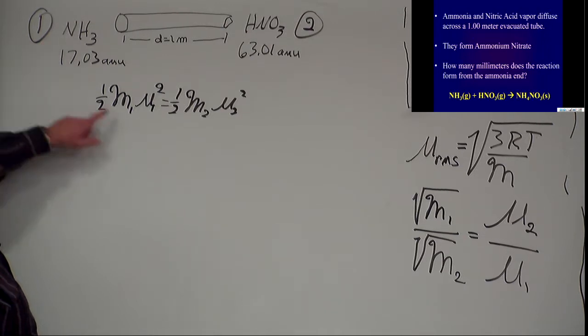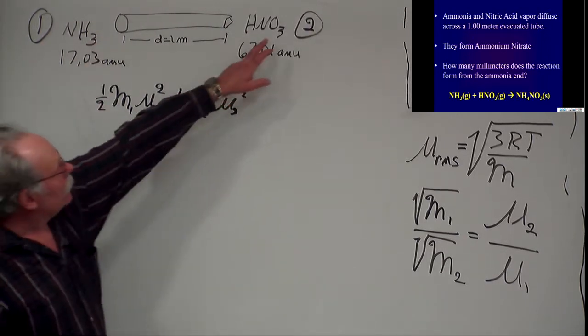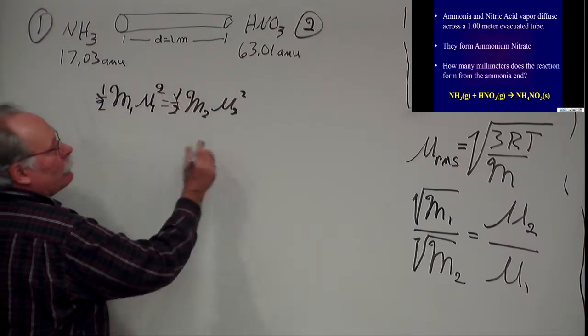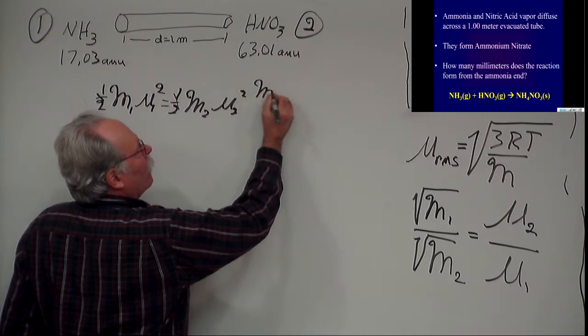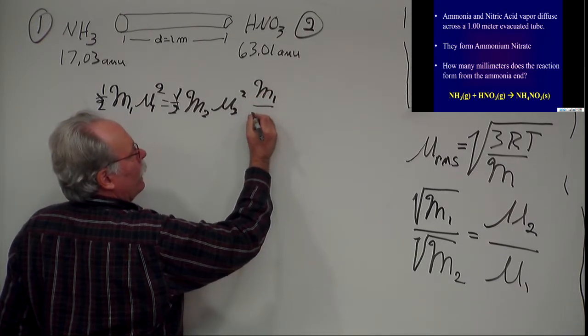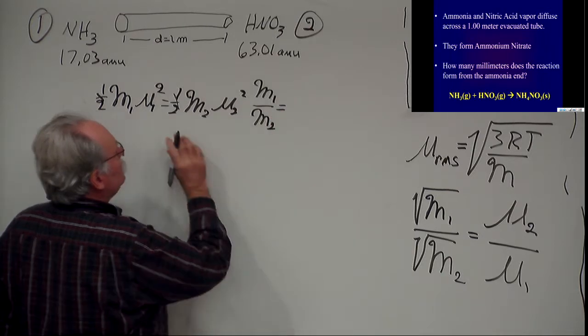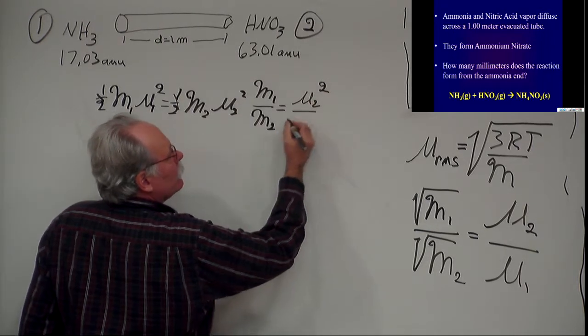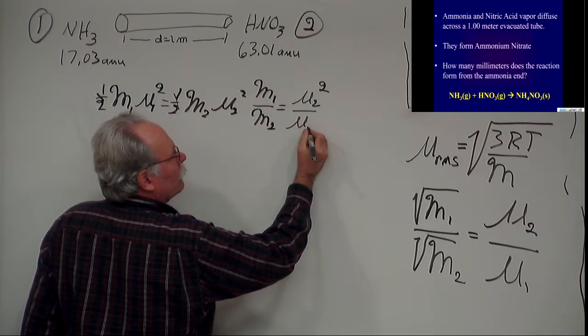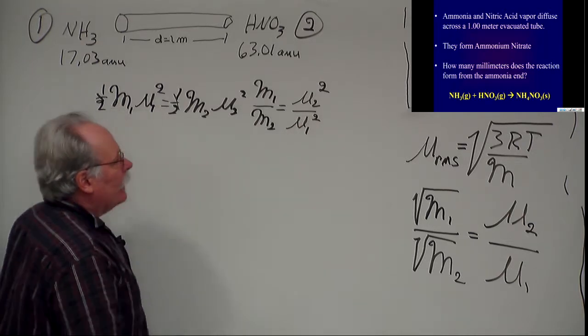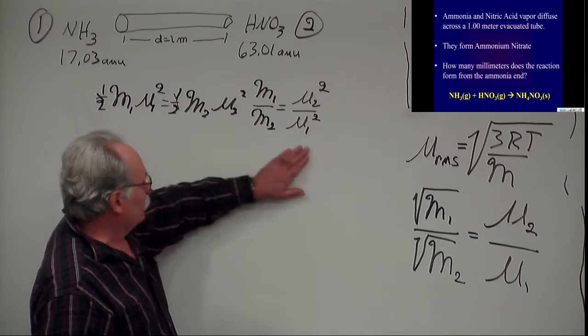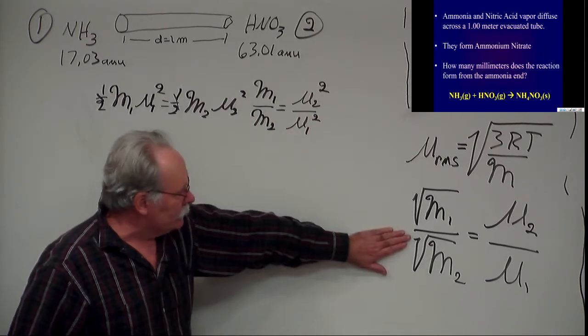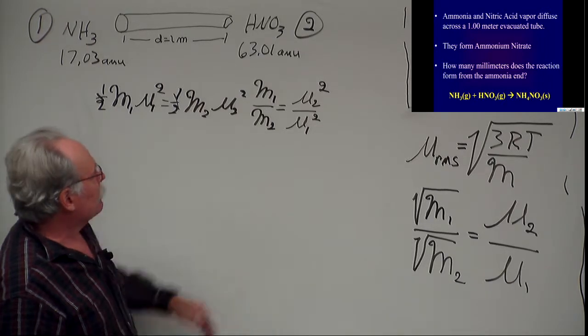I'm recognizing here the first compound will be ammonia, and the second compound will be nitric acid. Now I can cancel out the halves and rearrange this as the molar mass of the first compound divided by the second is equal to the root mean square velocity of the second squared divided by the root mean square velocity of the first squared. Now this equation is actually this equation. They're the same equation. If I take the square root of both sides here, I get this, or if I square this, I get this.